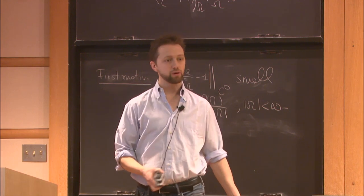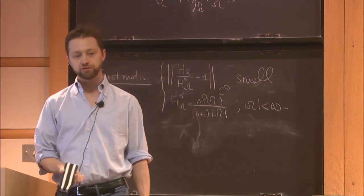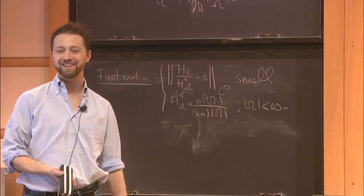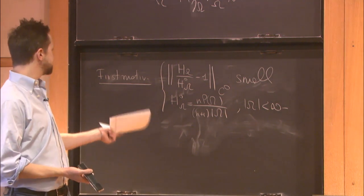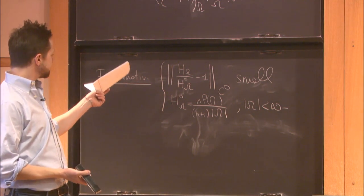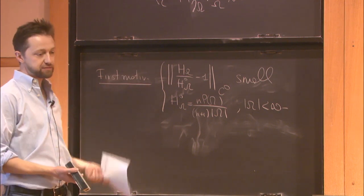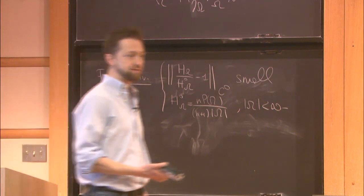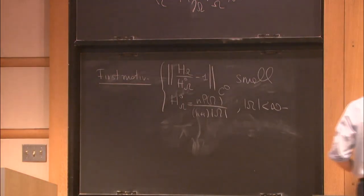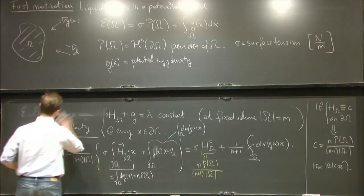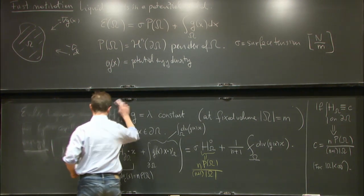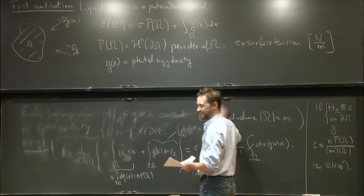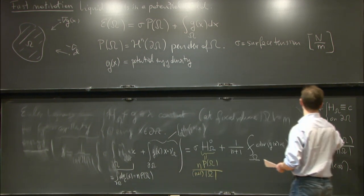There is another important problem where almost constant mean curvature boundaries appear, related not to the C⁰ deficit but to the L² deficit — the L² oscillation of the mean curvature. Since we are filming this talk, I will explain the motivation carefully.